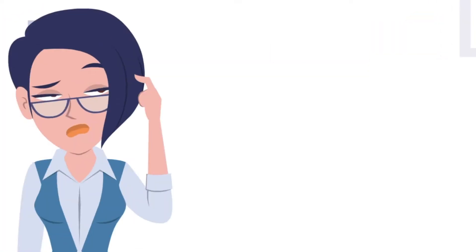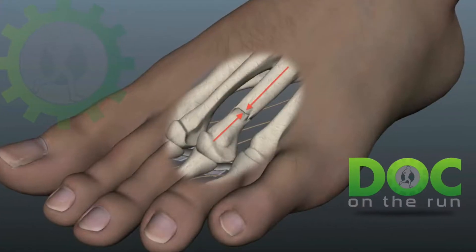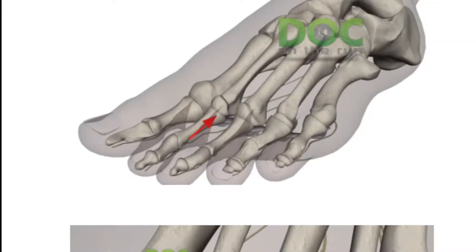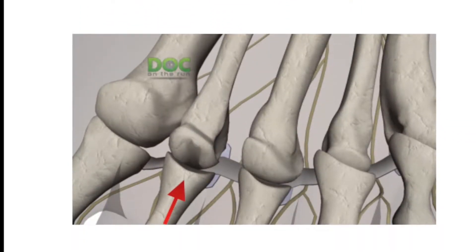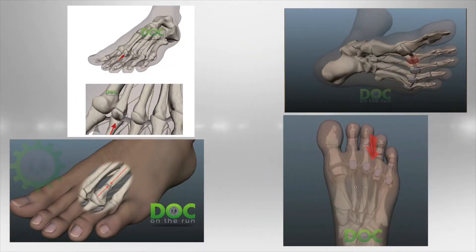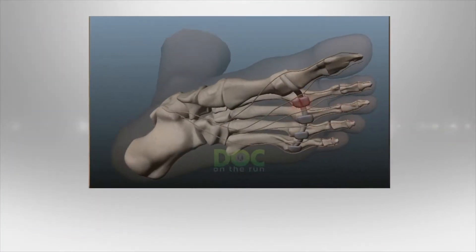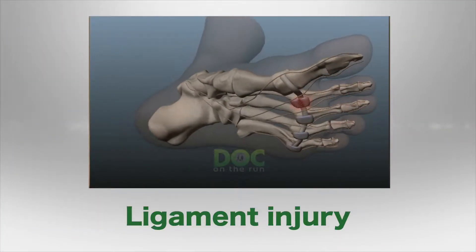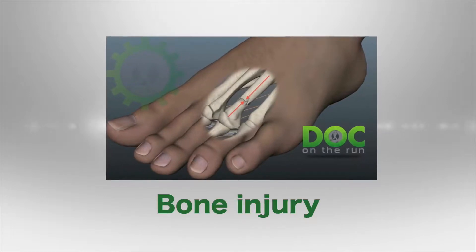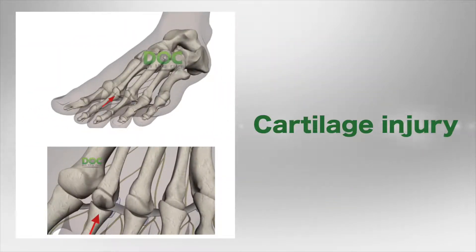Today we're going to talk about how you can tell the difference between metatarsal stress fractures, Morton's neuroma, plantar plate sprains, and osteochondritis. Each of these conditions actually involves a different structure. A neuroma is a nerve injury, a plantar plate injury is a ligament injury, a metatarsal stress fracture is a bone injury, and osteochondritis is a cartilage injury.